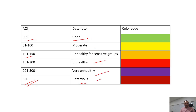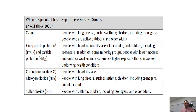Let me give you something related to unhealthy groups because it relates to your children as well. Whenever the AQI value is above 100 it becomes very dangerous for sensitive groups. Sensitive groups involve people with lung diseases, asthma, children, teenagers, and elderly people with such diseases. Carbon monoxide is very dangerous specifically for people with heart disease, so if AQI values are above 100 those people are not advised to go out.